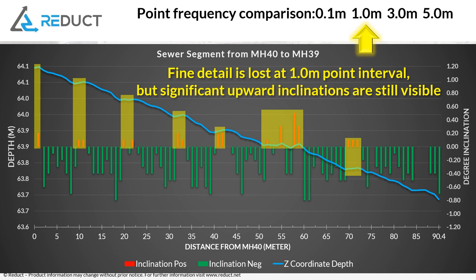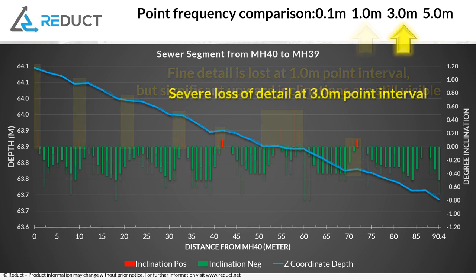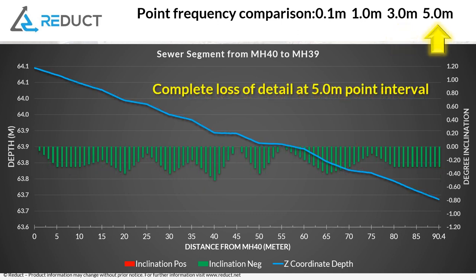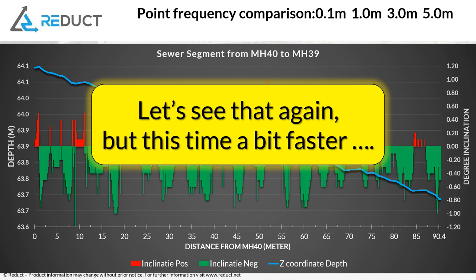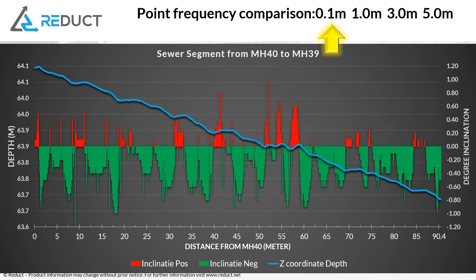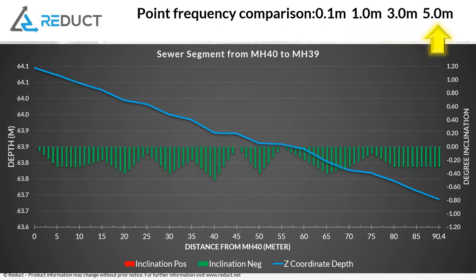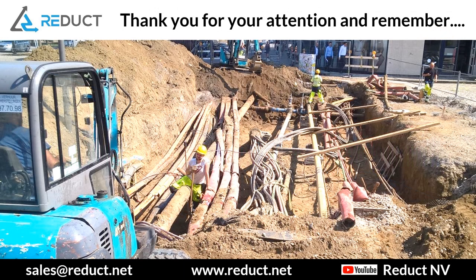If we go to a three-meter point interval, all of a sudden most of the upward inclinations are lost — a severe loss of detail. Only two very small ones are left, and it could even be waved away as saying there's no problem. And at a five-meter interval, there is complete loss of detail. This is a very good way of showing what point frequency can do to help you understand what is happening in the structure. If I was a contractor, I would give a five-meter point interval. But if I'm an owner, I wouldn't want that.